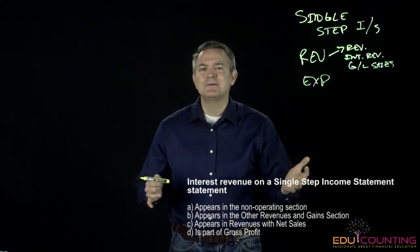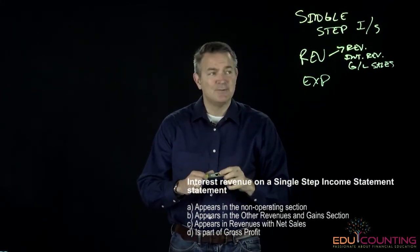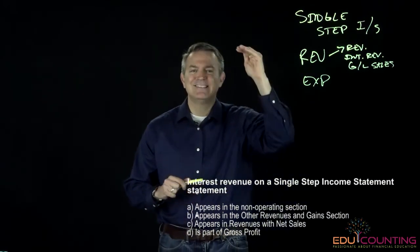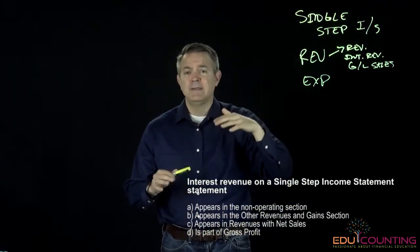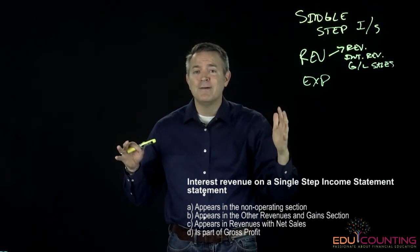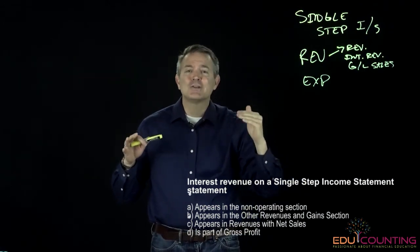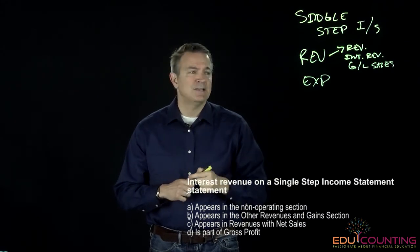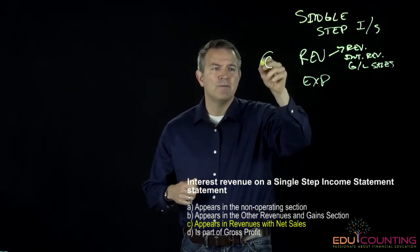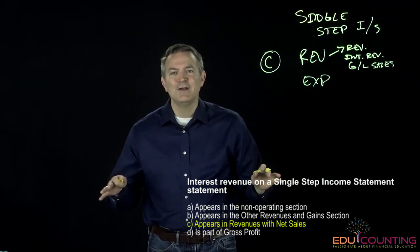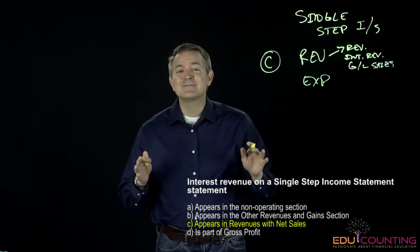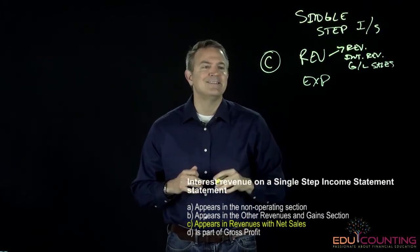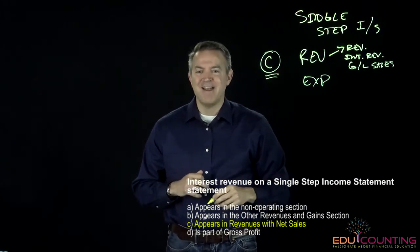What about D — is interest revenue part of gross profit? We don't calculate gross profit in a single-step income statement. That's only done in the multi-step, where you take sales with all the contra revenue accounts, then subtract cost of goods sold to arrive at gross profit. So D is not the answer. Interest revenue goes into the revenue section along with net sales, making C the correct answer.